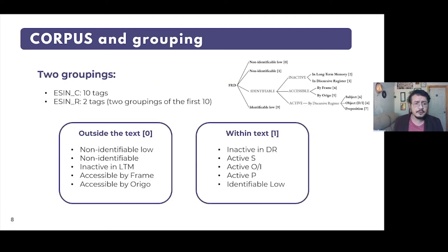In order to compare results, two groupings of informative states labels were chosen. The first is the one observing all the initial text tags. The second one is a reduced version that obeys a more operative criteria, identifying references that are mentioned within the text and those that are not. For this binary category, the tags not-identifiable law, not-identifiable, inactive in long-term memory, accessible by frame, and accessible by or ego were grouped into outside the text. While within text, we can find the tags inactive in discourse register, active subject, active object or indirect object, active by a preposition, and identifiable law.